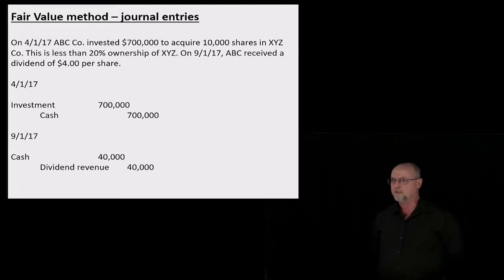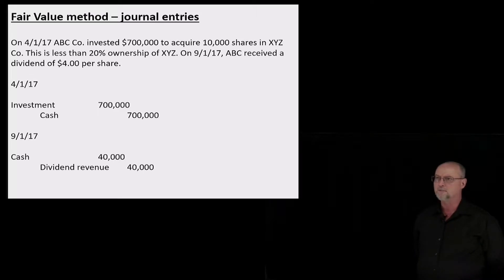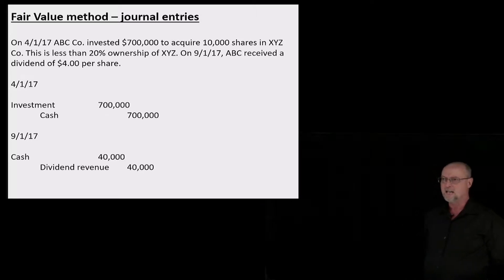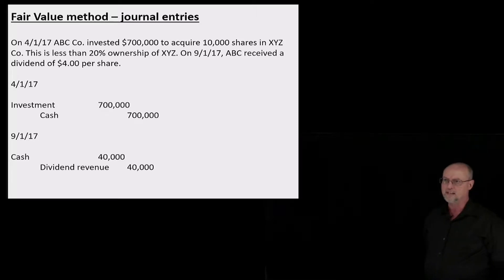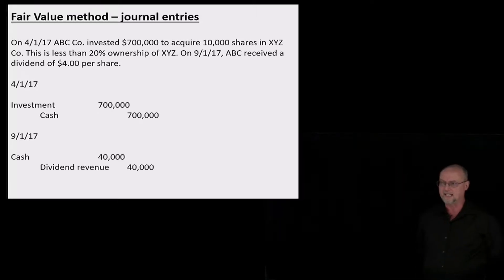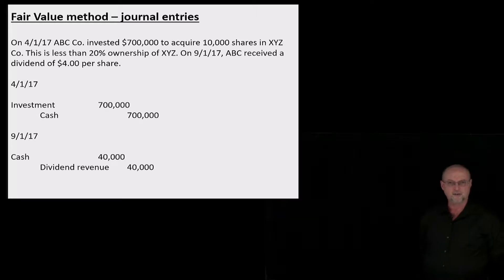On April 1st, ABC invested $700,000 to acquire 10,000 shares in XYZ Company — this is less than 20% ownership, so we use the fair value method. On September 1st, ABC paid a dividend of $4 per share; we own 10,000 shares, so that's a $40,000 dividend. The journal entry on the day of investment: debit the investment, credit cash. When we receive the dividend: debit cash and credit dividend revenue.